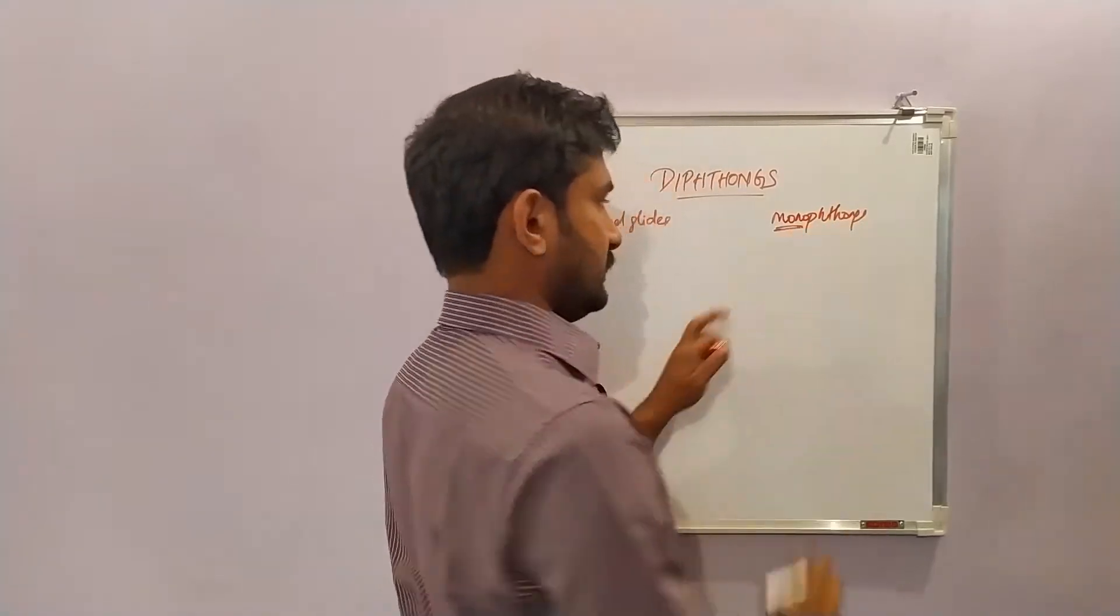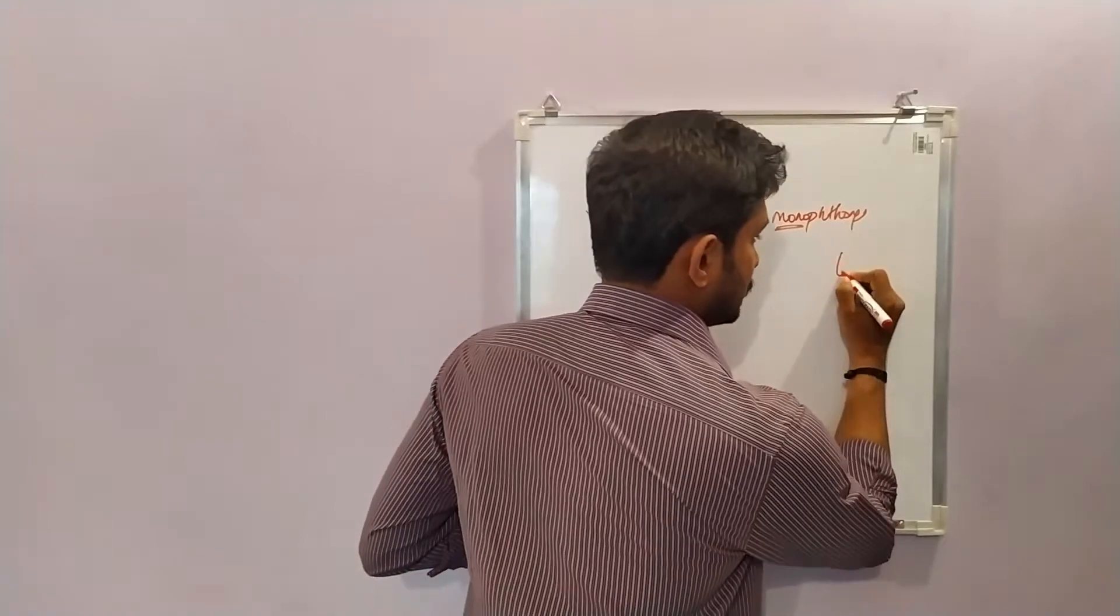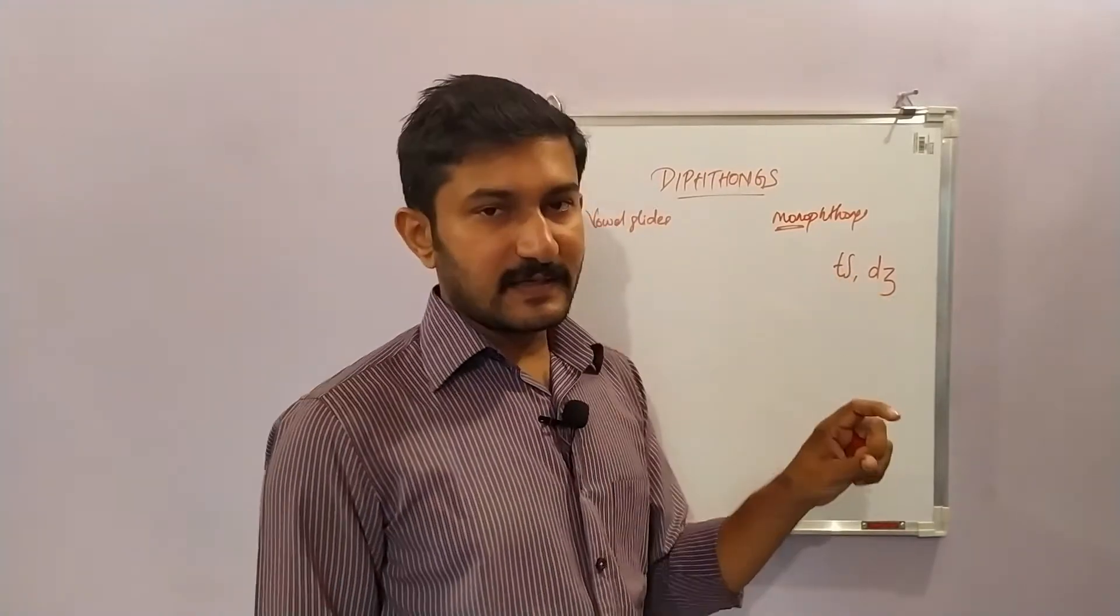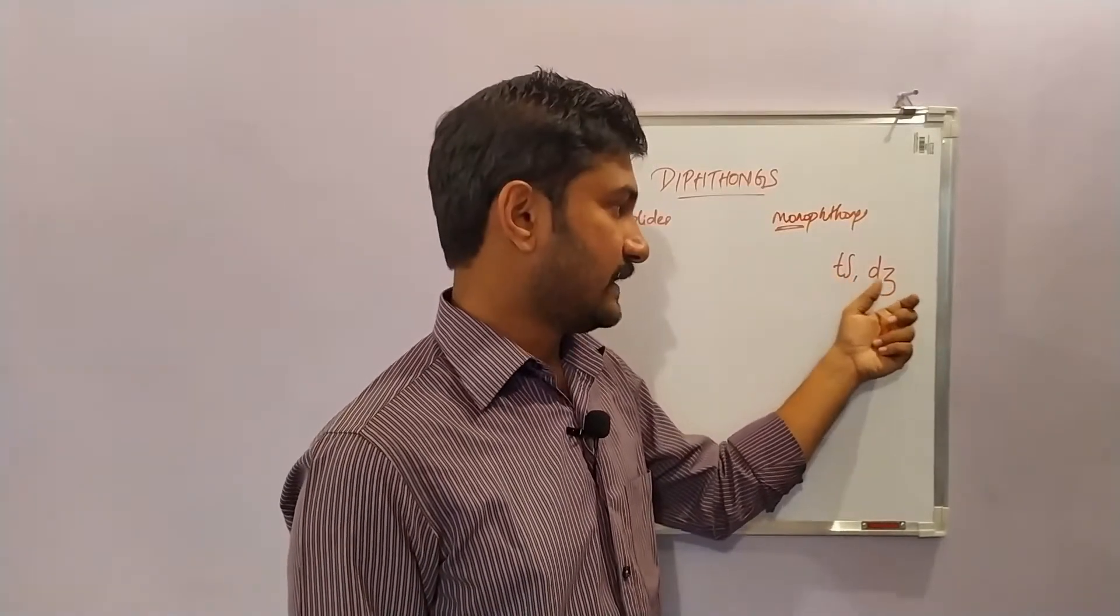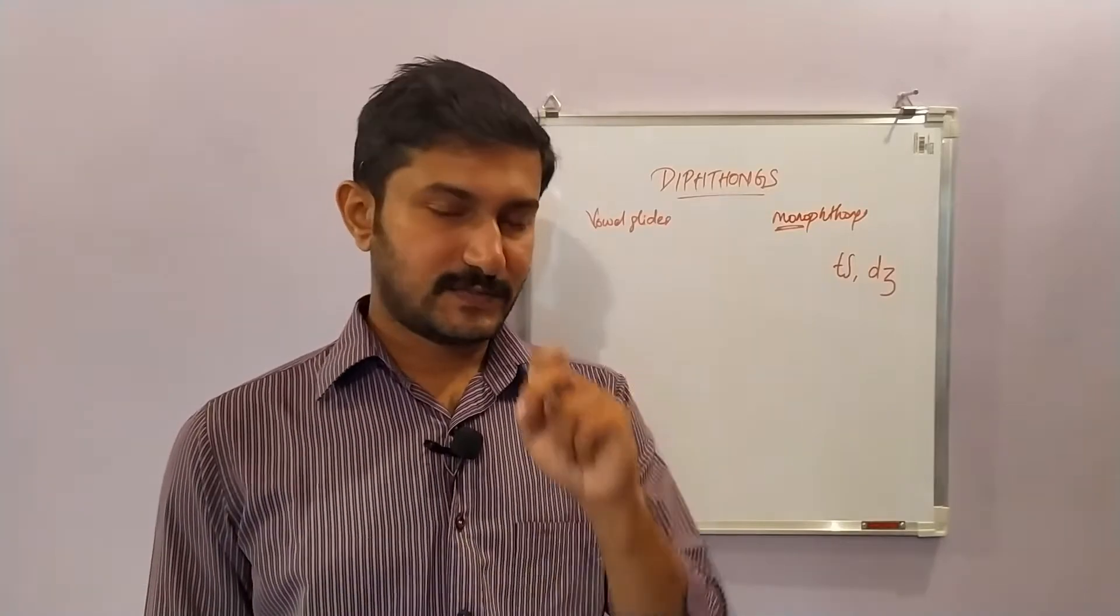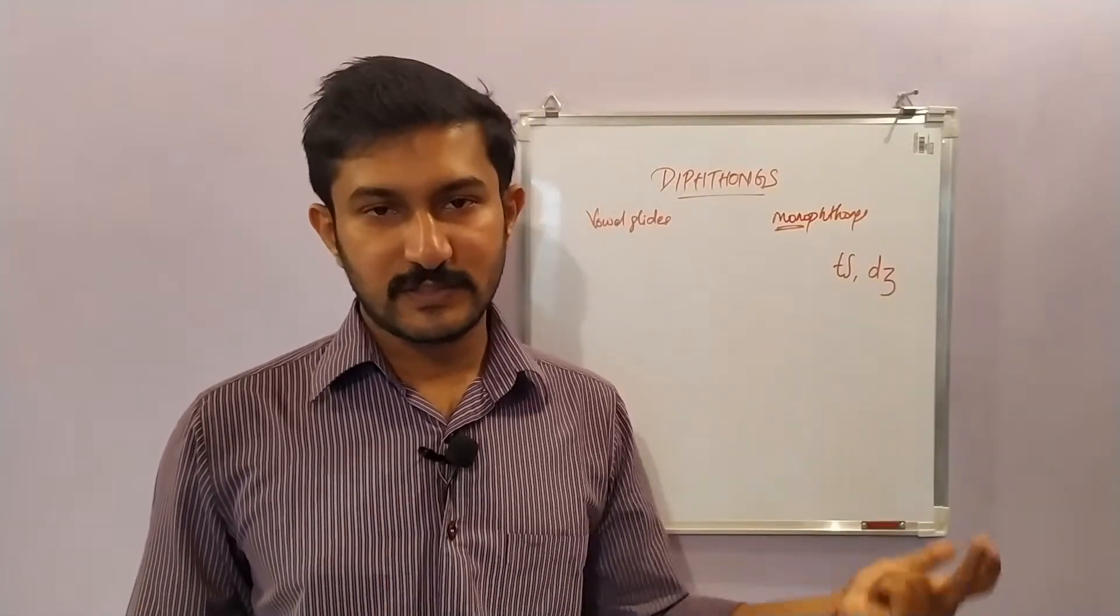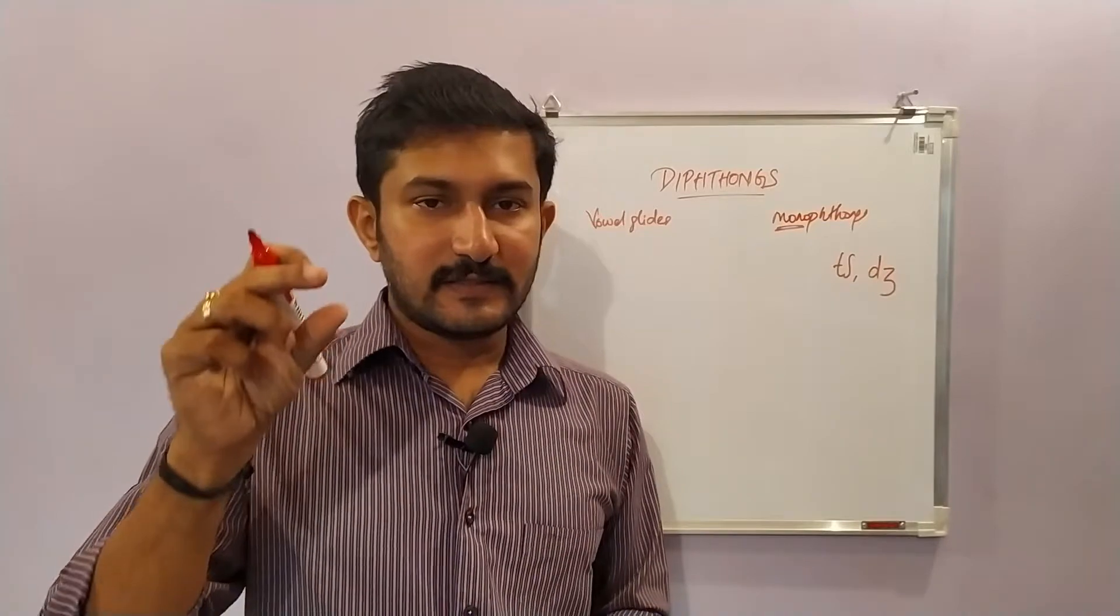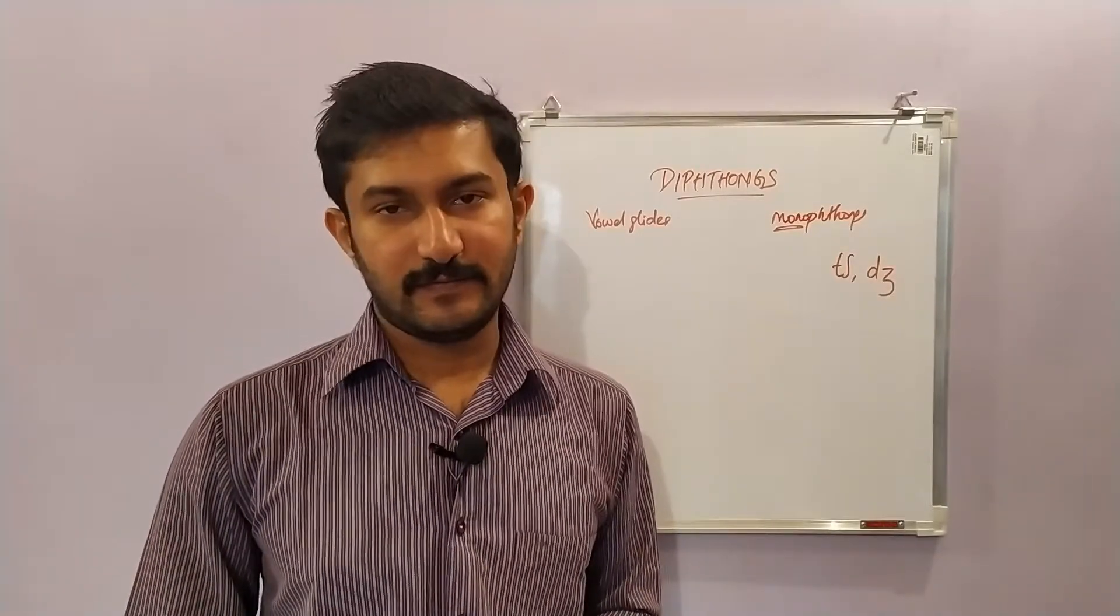Mono means one or single. Diphthong, here we have two sounds. We are already familiar with the affricate sounds ch and j. These affricates are represented by digraphs, or two sounds, one that of a plosive and the second that of a fricative. Similarly, in diphthongs also we have two sounds. These two are vowel sounds. In the case of pure vowels, the tongue assumes a particular position in the mouth. Here in diphthongs, the tongue starts in the position of one particular vowel and it glides or moves to the position of another vowel.